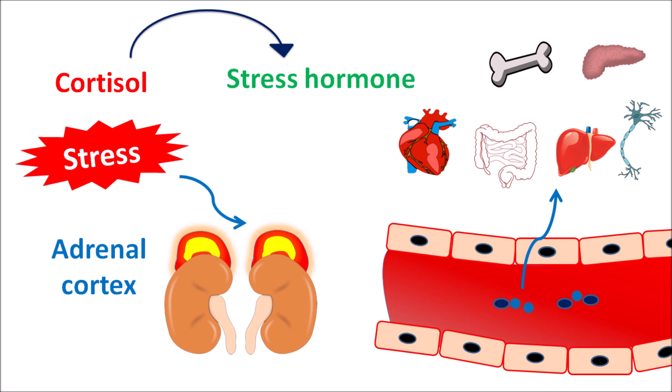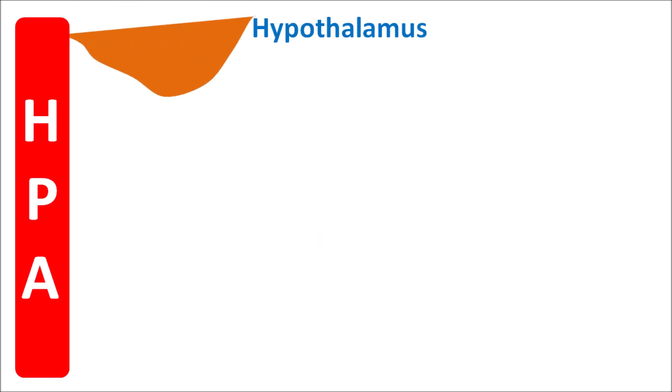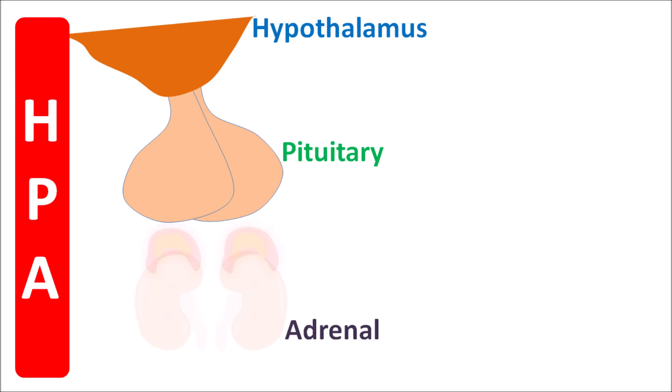But sometimes cortisol levels are going to be elevated, which may be due to three reasons. The release of cortisol is stimulated by the HPA axis, involving the hypothalamus, anterior pituitary, and adrenal glands.